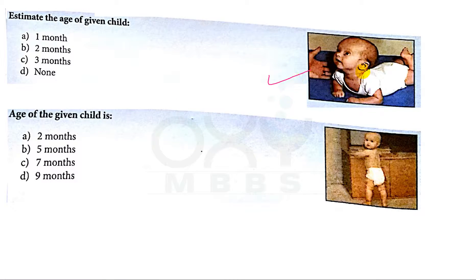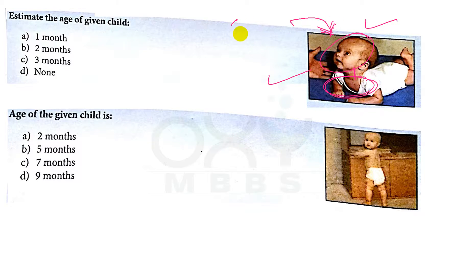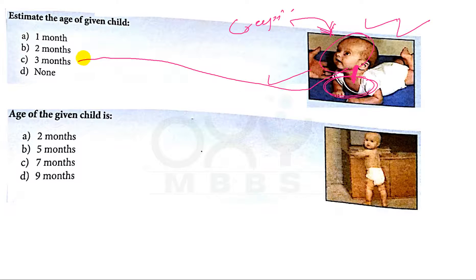Now in this picture, in the prone position, the baby is lifting some part of the chest along with the neck and head. This is the starting point — the basic position for creeping. And in this picture, the baby or child has achieved neck holding capacity. That is why the age of the baby is at around three months of age, so C is the correct answer.